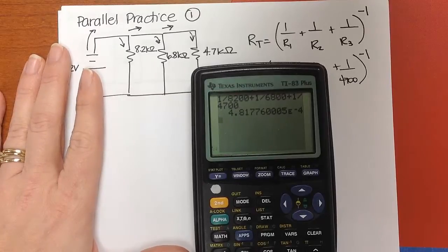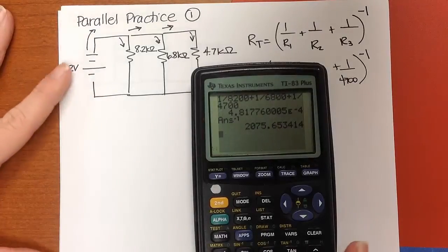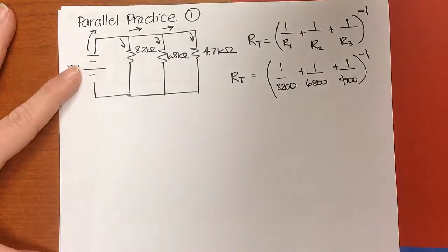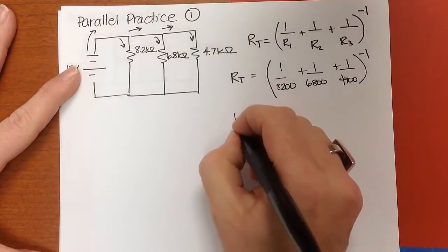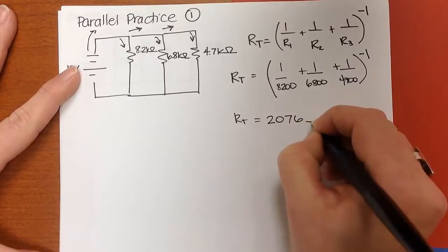And now I need to do the inverse of that, and I get an equivalent resistance of 2,076. So RT is equal to 2,076 ohms.